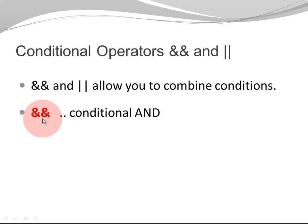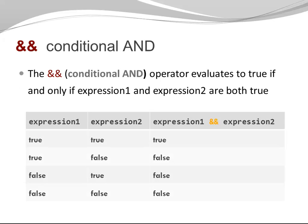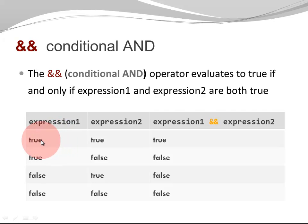This is the conditional AND, and that is the conditional OR. Both operators associate from left to right. The conditional AND operator evaluates to TRUE if and only if expression 1 and expression 2 are both TRUE. There is only one situation when expression 1 AND expression 2 evaluates to TRUE, and that is when both expressions are TRUE.